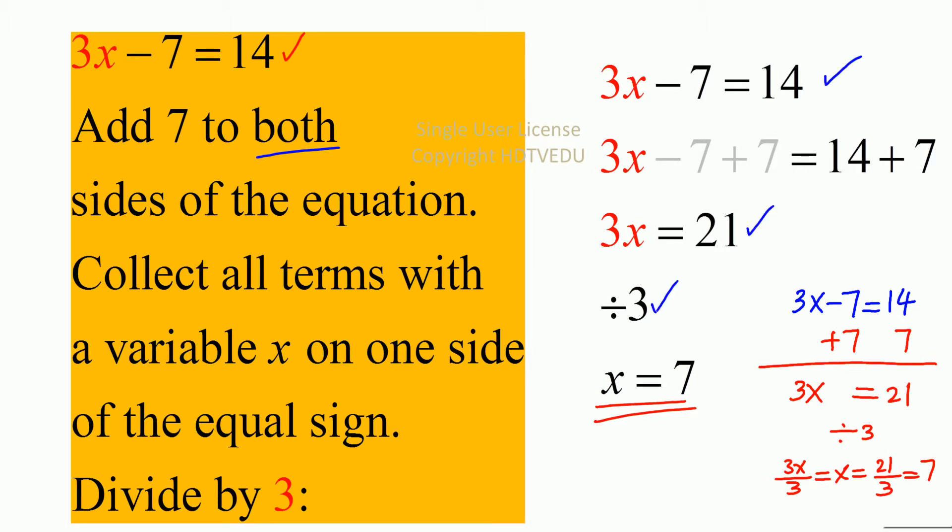Adding 7 is the addition property. Dividing by 3 is the division property, and so what do we get? x is equal to 7.